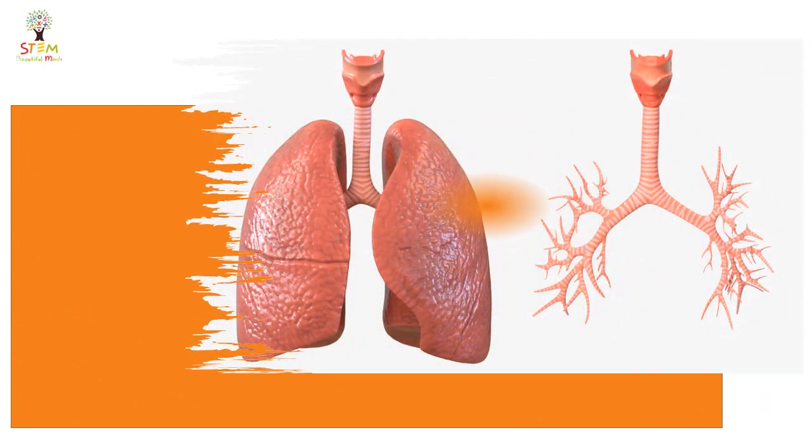The trachea divides into two bronchi, left bronchus and right bronchus, which enter the two lungs. The two lungs occupy the thoracic cavity and are surrounded by the ribs, the rib cage, to protect them.